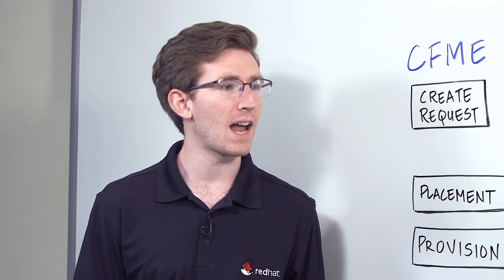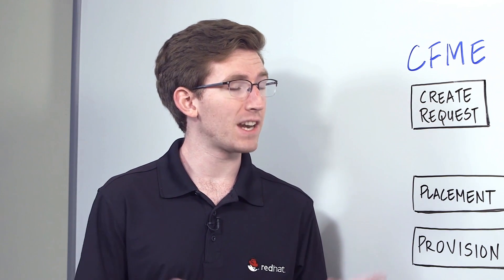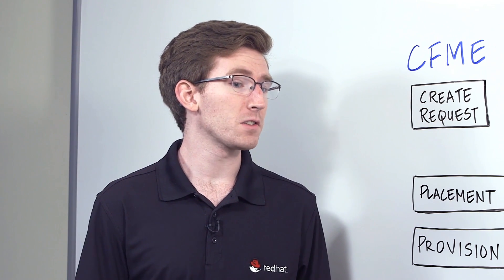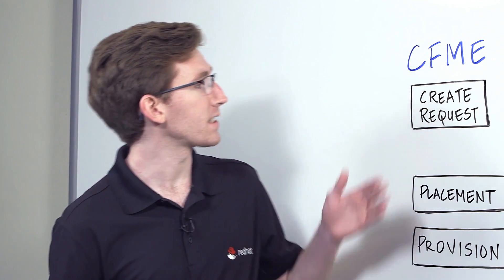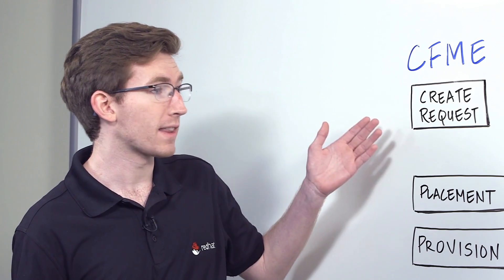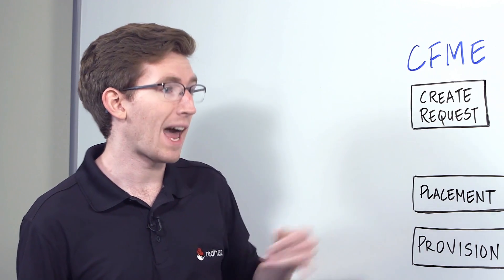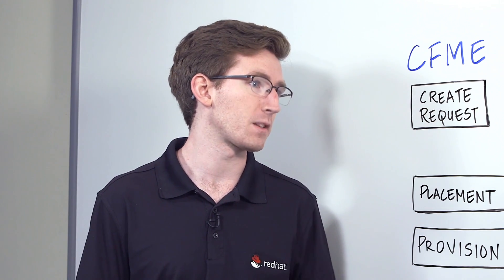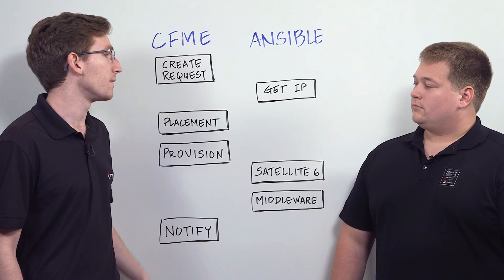CloudForms is Red Hat's main hybrid cloud management product. It allows you to integrate with a lot of different things in your environment and manage them all from one place where you can get information and talk to all of them. It's also a product that lets you break up major workflows important to your business and IT groups into smaller tasks. For example, a normal provisioning workflow where you start off creating a request to your virtualization environment, make some changes, get it provisioned, and then notify the user at the end. This allows you to set up things like one-click provisioning of a new server.